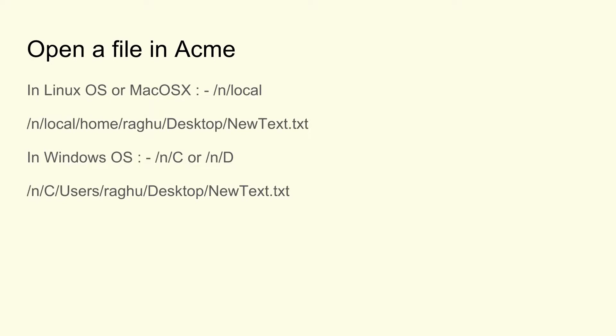To open a file in Acme, if Acme is installed on Linux or Mac, the path of the file should be prefixed with /n/local. If Acme is installed on Windows, then the path of the file should be prefixed with /n/d or d drive.